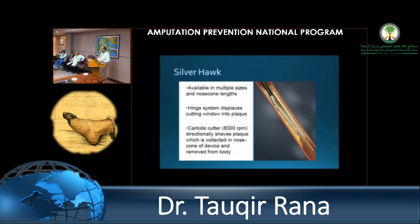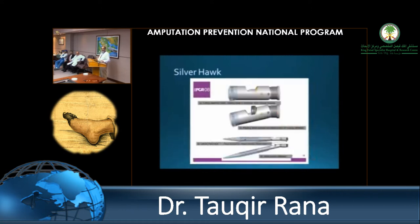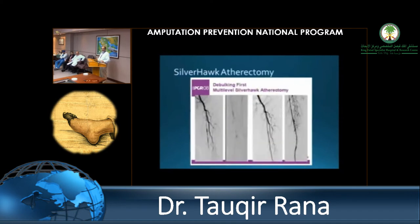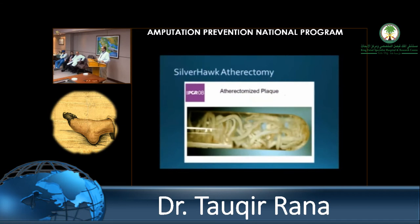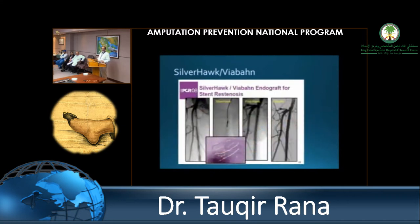Atherectomy or debulking is another choice — once you have crossed a lesion, you can remove the plaque. You run the SilverHawk, which is a rotatory device, and once run, you get a true lumen with all the plaque collected in the bottle. Once you have the plaque out, you've addressed the inciting disease, and then you can use drug-eluting balloon, drug-eluting stent, or covered stent to maintain patency. Here is another case presented at PCR where in-stent stenosis was crossed, endoatherectomy was performed percutaneously, and a covered stent was placed.